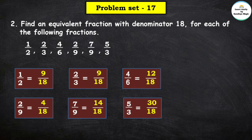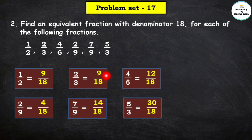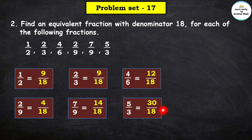So here we have found equivalent fractions with denominator 18 for all the given fractions: 1 upon 2 → 9 upon 18; 2 upon 3 → 12 upon 18; 4 upon 6 → 12 upon 18; 2 upon 9 → 4 upon 18; 7 upon 9 → 14 upon 18; 5 upon 3 → 30 upon 18.